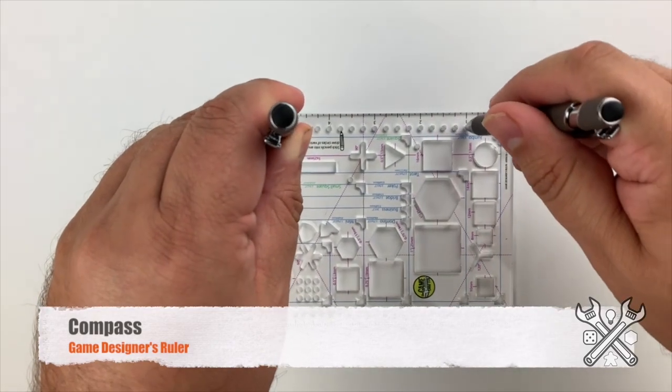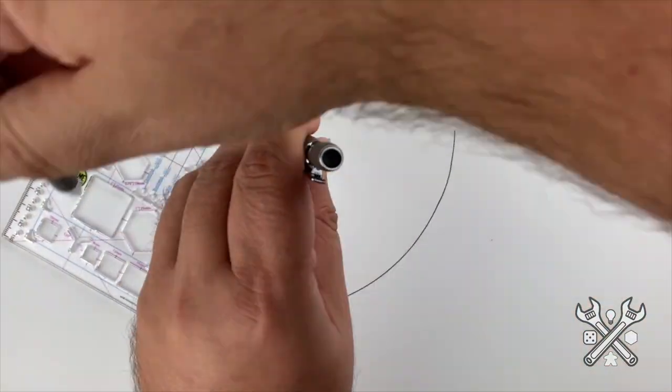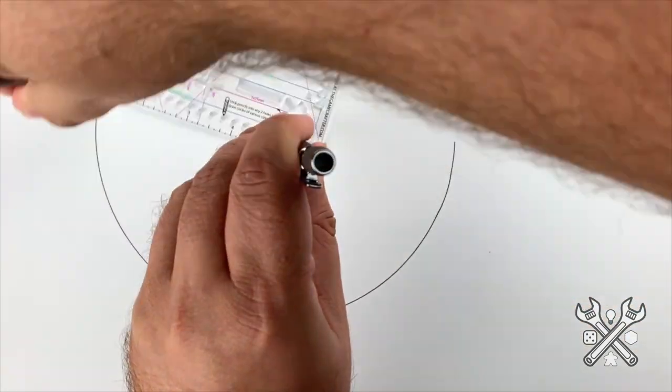There are also metric and imperial compasses, allowing you to draw perfect circles of almost any size.